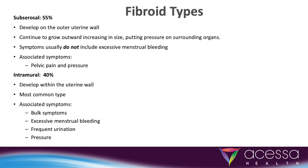Subserosal fibroids are the most common type of fibroid. They are found on the outer uterine wall and are the cause of bulk symptoms such as pain and pressure.